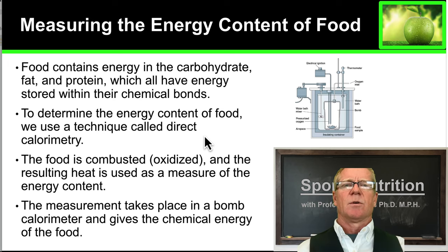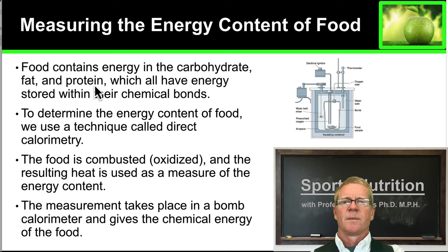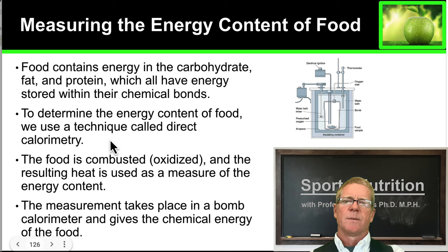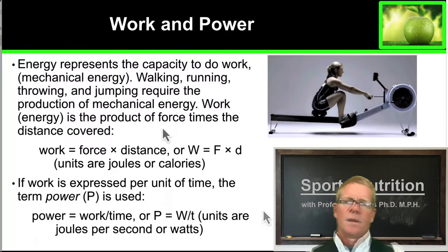So how are we going to measure the energy content of foods? Food energy is stored as either carbohydrates, fats, or proteins — they all have energy stored in chemical bonds. To determine the energy content of foods, a method called calorimetry is used. In direct calorimetry, the food is combusted or oxidized and heat is measured, usually in a bomb calorimeter. This gives us a measure of the chemical energy of the food — how many calories are present.